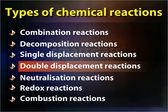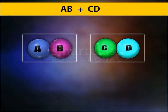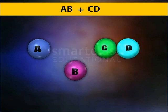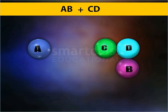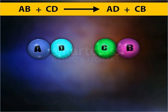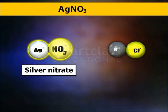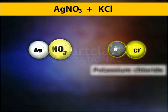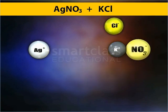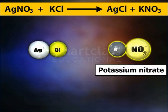Double displacement reactions are chemical reactions in which two compounds exchange their constituents, mostly ions, to form new compounds. For example, silver nitrate and potassium chloride mutually exchange their constituent ions to form silver chloride and potassium nitrate.